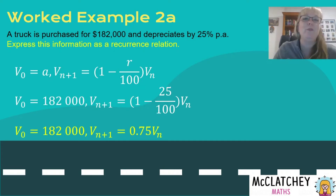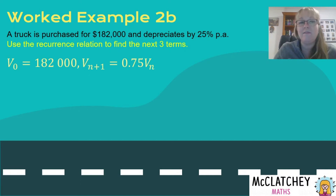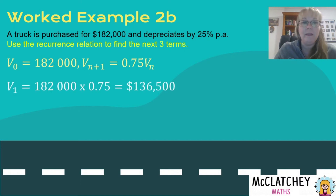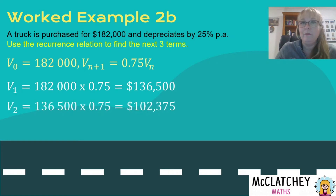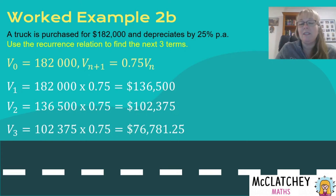For part 2b, we find the next three terms starting from V0 = 182,000. V1 = 182,000 × 0.75 = 136,500. V2 = 136,500 × 0.75 = 102,375. And the third term V3 = $76,781.25.